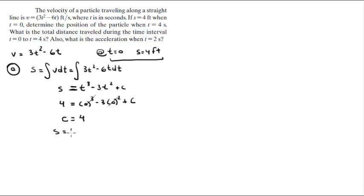Therefore, s is equal to t cubed minus 3t squared plus 4. Now we got the formula for the position. First question is the position of 4, so all you got to do is replace 4 by t in this equation, and you get that the position of 4 is 20.